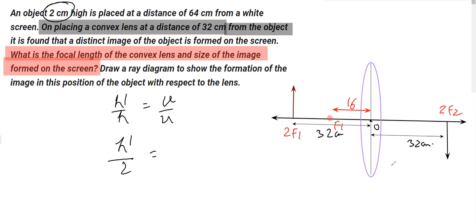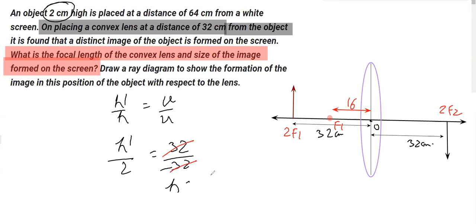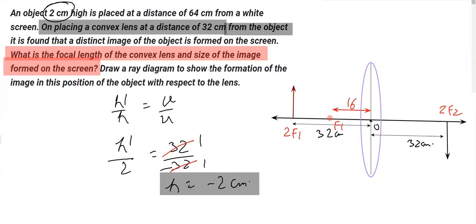u, the object distance, is 32 but on the left-hand side, so it is minus 32. We can substitute these values and find by cross multiplication that h' comes out to be minus 2 centimeters. This is the height of the image.